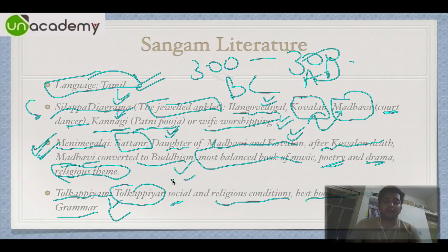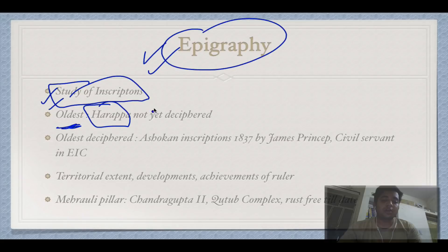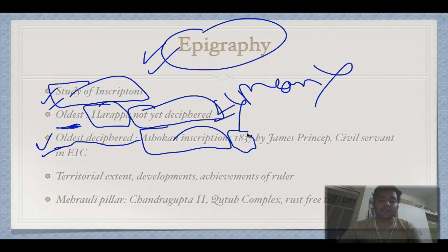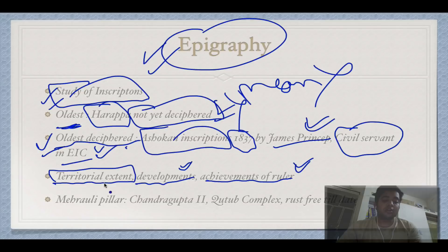Epigraphy is the study of inscriptions. The oldest inscriptions found are from Harappa, but they have not yet been deciphered — we do not know what they mean. The oldest deciphered inscriptions are the Ashokan inscriptions, deciphered in 1837 by James Prinsep, a civil servant in the East India Company. Inscriptions tell us about the territorial extent of kingdoms, developments within them, and achievements of rulers.